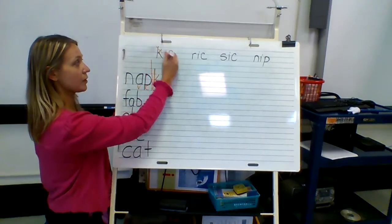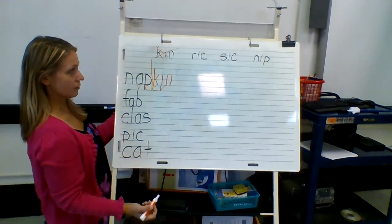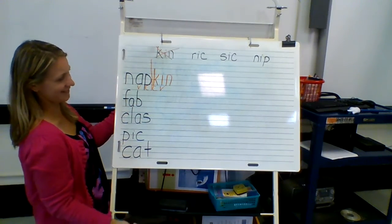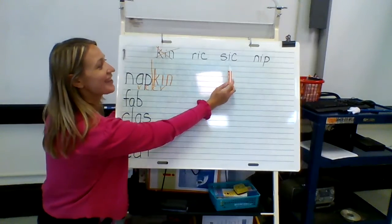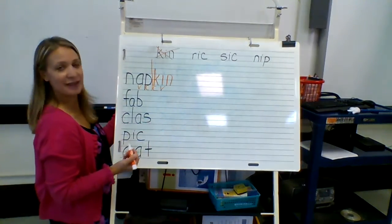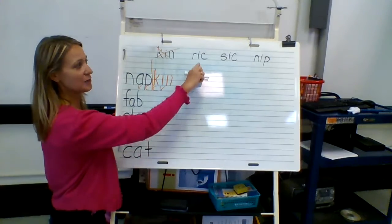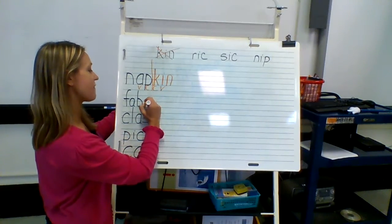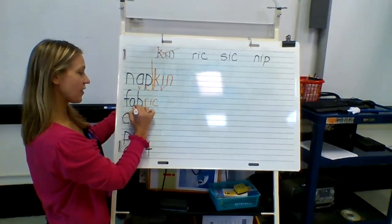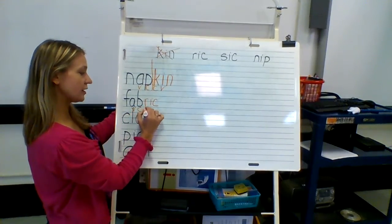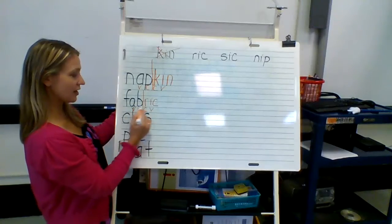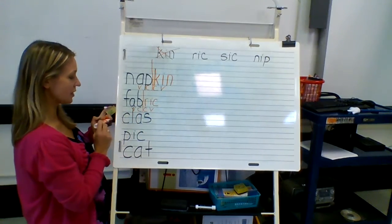Next we have 'fab.' What would go here — rick, sick, or nip? I hope you said rick, because we're going to have fabric. Again, we have our vowel-consonant-consonant-vowel pattern, so fabric is divided into two parts there.